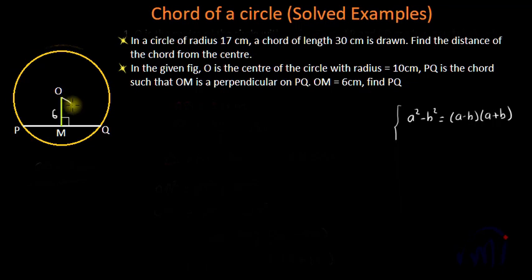So if I draw OQ, this will be the radius of the circle and the length of this will be 10 centimeters. We know QM is equal to 1 by 2 PQ, because if I draw a perpendicular from the center of a circle on any chord, that actually bisects the chord. So M, the foot of the perpendicular OM, actually bisects chord PQ, or we can say PM is equal to MQ.